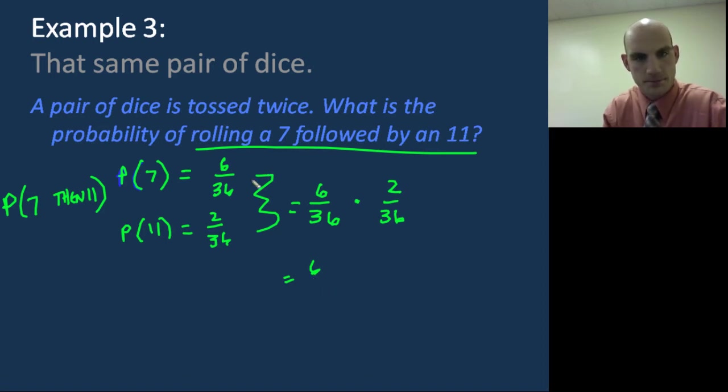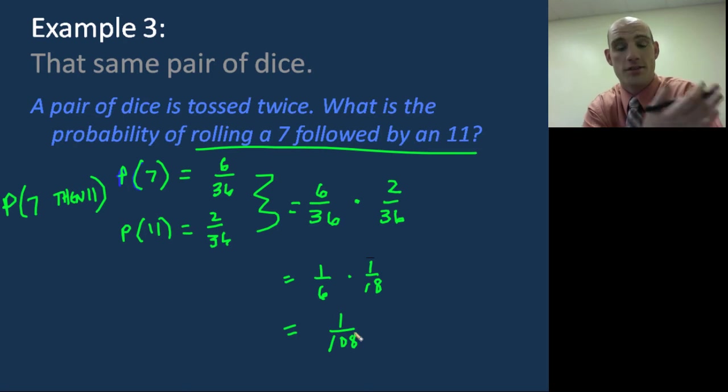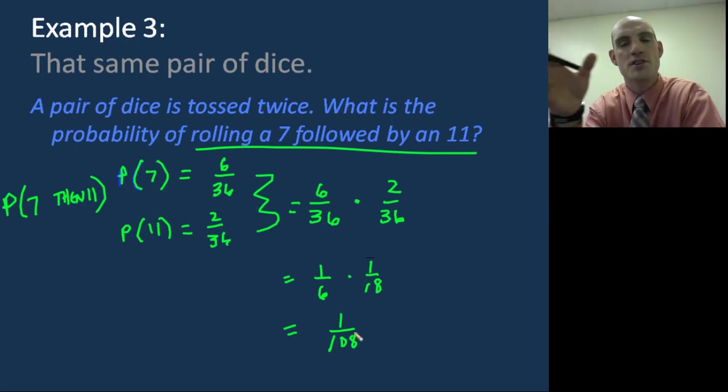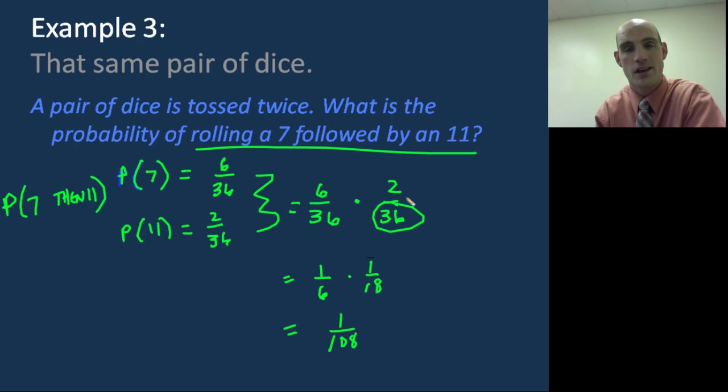Which is equal to, so this is going to be the probability of 7, then 11. And that's going to give me 6 over 36. Let me just reduce it. 1 out of 6 times 1 out of 18, which gives me a 1 out of 108 chance of actually doing this. So there's less than a 1% chance that I'm going to roll a 7 and then an 11. Okay? Those are subsequent independent events because they don't have bearing on one another. So notice the denominators are the same because nothing changed. I still have 36 possibilities because I'm tossing that same pair of dice.